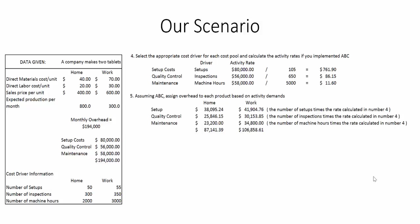Assuming ABC, we assign overhead to each product based on activity demands. You take the number of setups times the rate just calculated. For the home tablet setup costs, we take 50 setups multiplied by the rate of $761.90, which gives us $38,095.24. The rest of these calculations work exactly the same way for each activity.